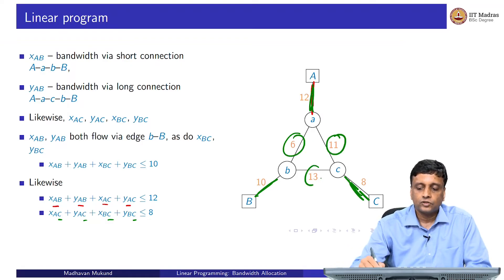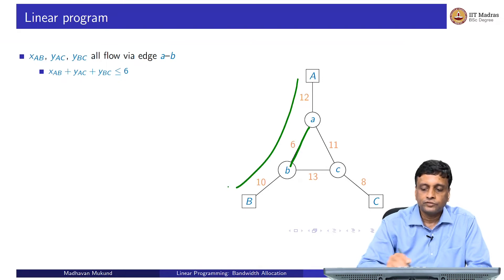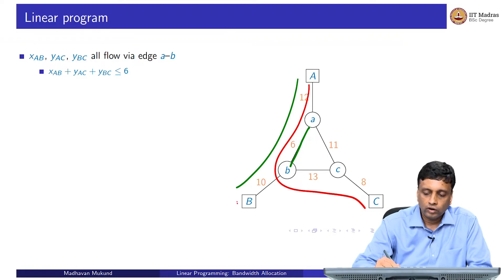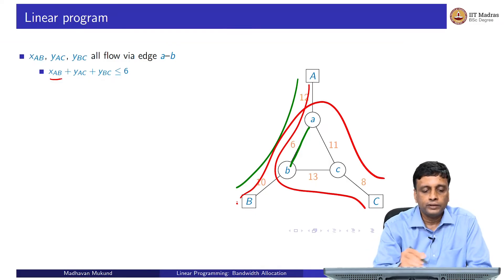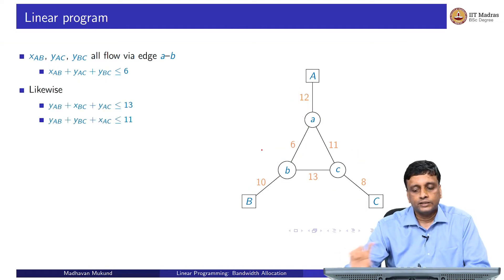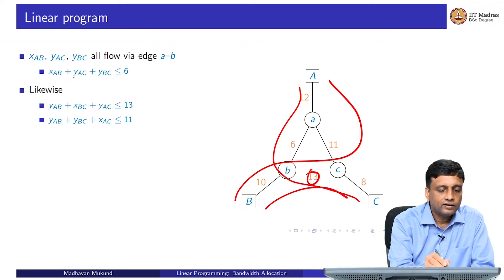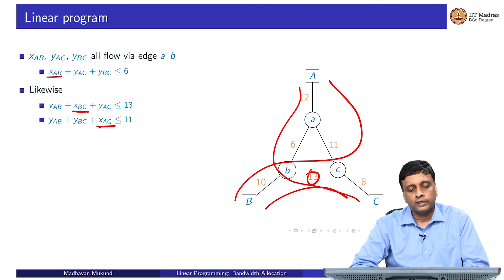We also need to express the constraints on the three internal links between the nodes of the ISP itself. For the edge between small a and small b, the short edge from A to B follows this link, the long edge from A to C follows this link, and the long edge from B to C follows this link. So each internal link carries one short edge and two long edges. The xAB short link, plus the long links from A to C and B to C, cannot exceed the capacity of 6. Similarly for the other internal links — one short link and two long links, not exceeding the edge capacity.